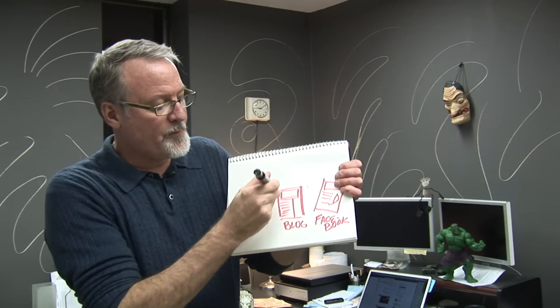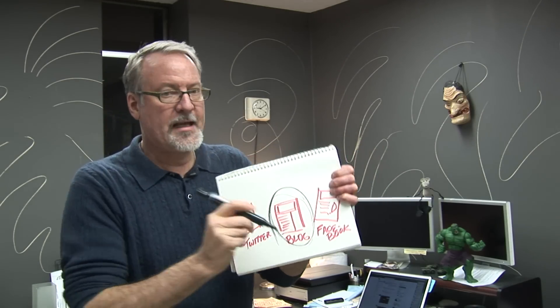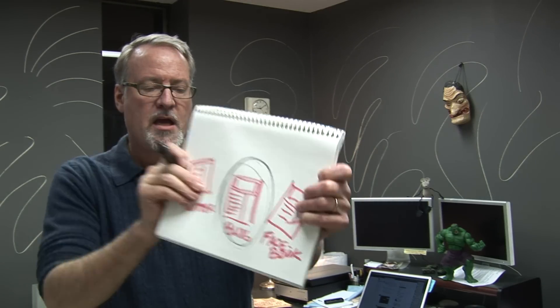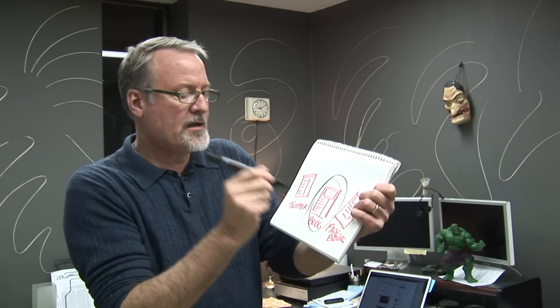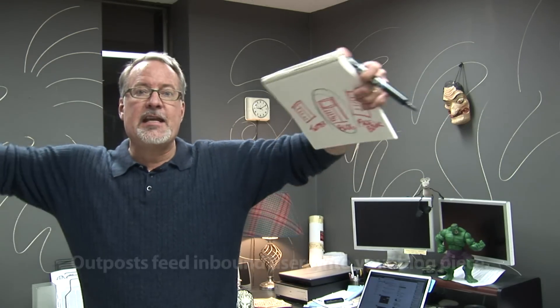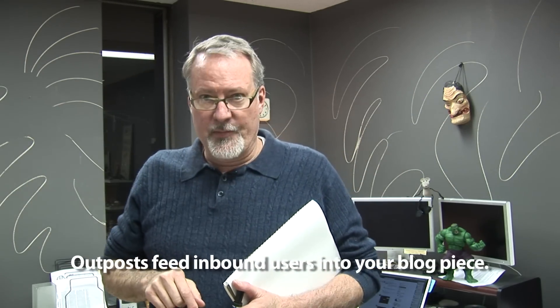This is the mothership right here — that's your mothership, your blog. Facebook, Twitter, LinkedIn, YouTube, and other social media are called outposts. They're called outposts because they are satellites, like moons, to the mothership, which is your blog. It could be your website, but right now we're saying it's your blog. All of those things exist to feed inbound users into your blog.